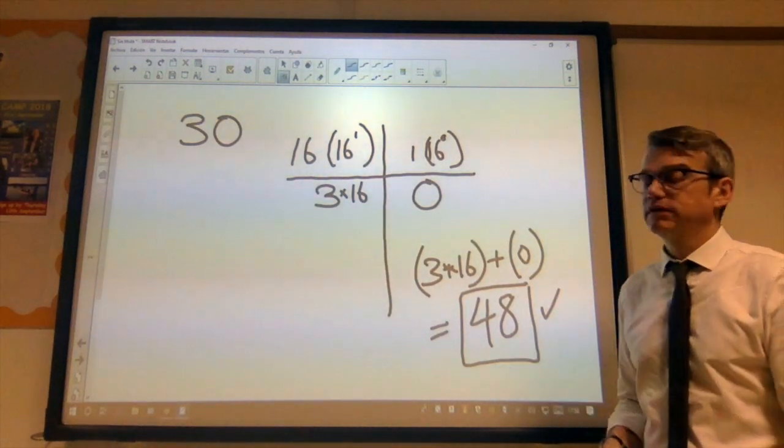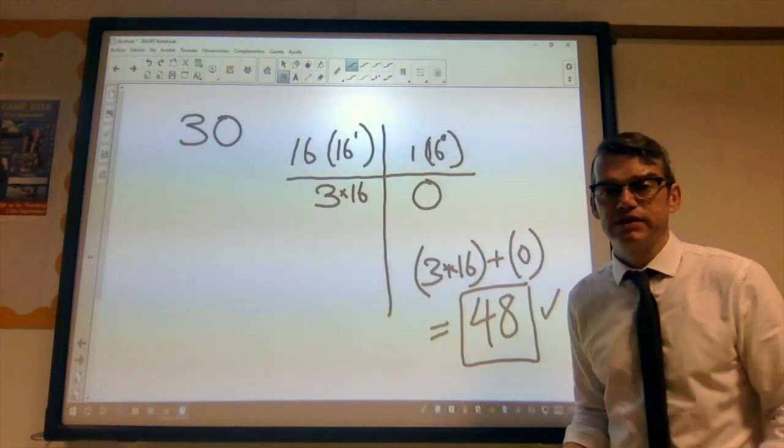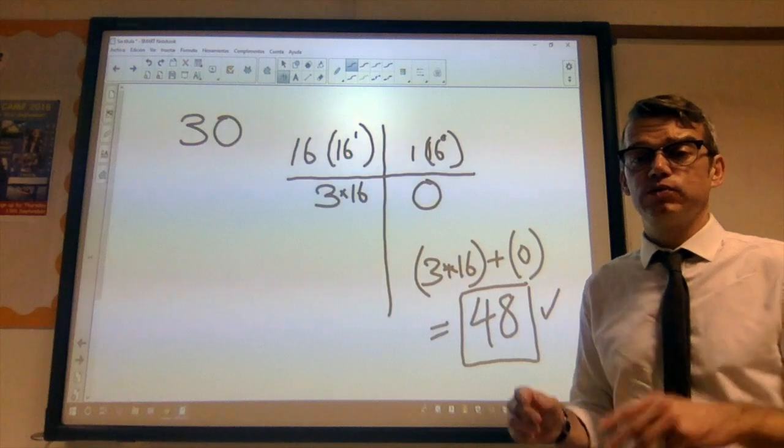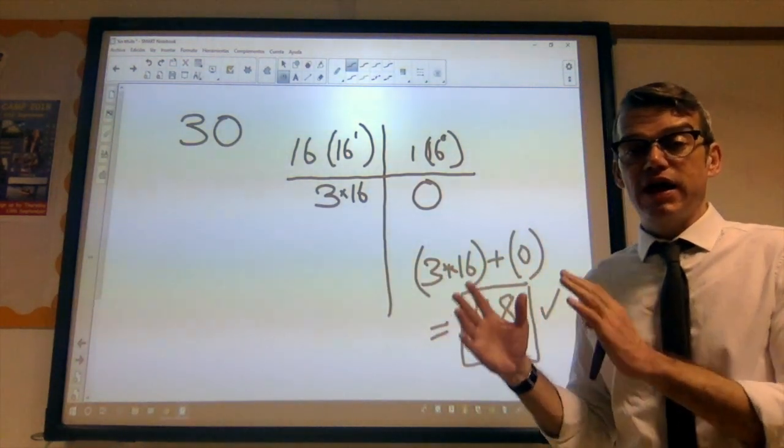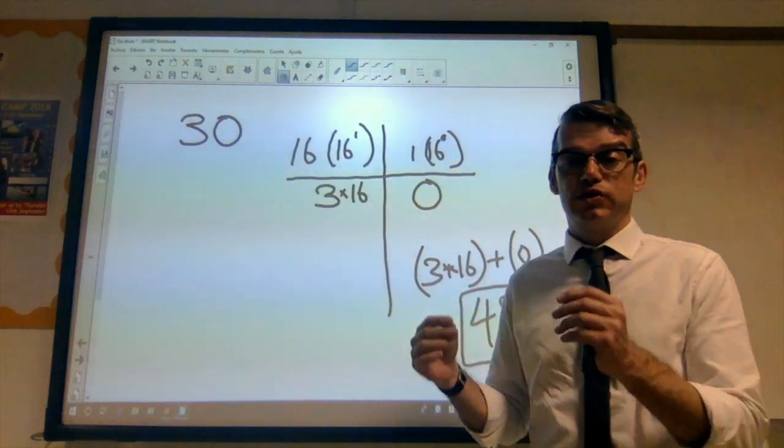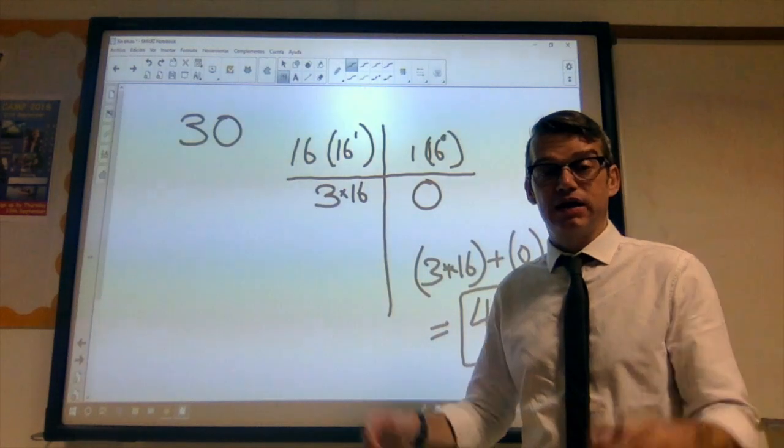So, that's converting from the denary number system to the hexadecimal number system. We convert to binary first. We break the binary number up into blocks of four bits. We convert that block of four bits to its equivalent hexadecimal digit. And that gives us our answer.